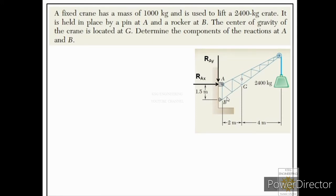The rocker support at B provides only one constraint, normal to its surface. We label this reaction as RBX, acting at 90 degrees to the surface of the rocker support at point B. We assume it acts towards the right. The weight of the crane acts downward, and the weight of the crate also acts downward. When converting mass to weight, we multiply by 9.81 — so the crate weight is 2400 × 9.81.